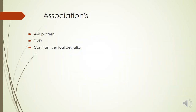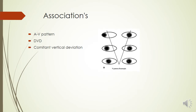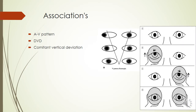Regarding associations, primary constant exotropia is commonly associated with AV pattern, dissociated vertical deviation (DVD), and concomitant vertical deviation. V-pattern exotropia is commonly seen, where the angle of deviation differs between upgaze and downgaze — the deviation increases in upgaze. DVD refers to either eye going up and extorting. Concomitant vertical deviation is also very common in such cases.